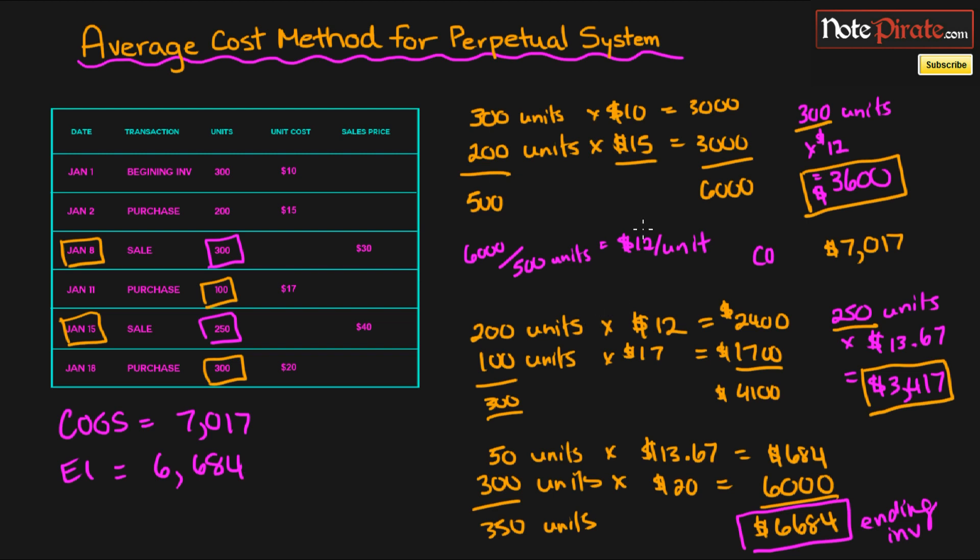Remember that you always do this moving average with the average cost method using the perpetual system and not for the periodic system. So we're done now for the merchandise inventory series and we can finally start talking about receivables in the next tutorial. So I'll see you guys in the next one.